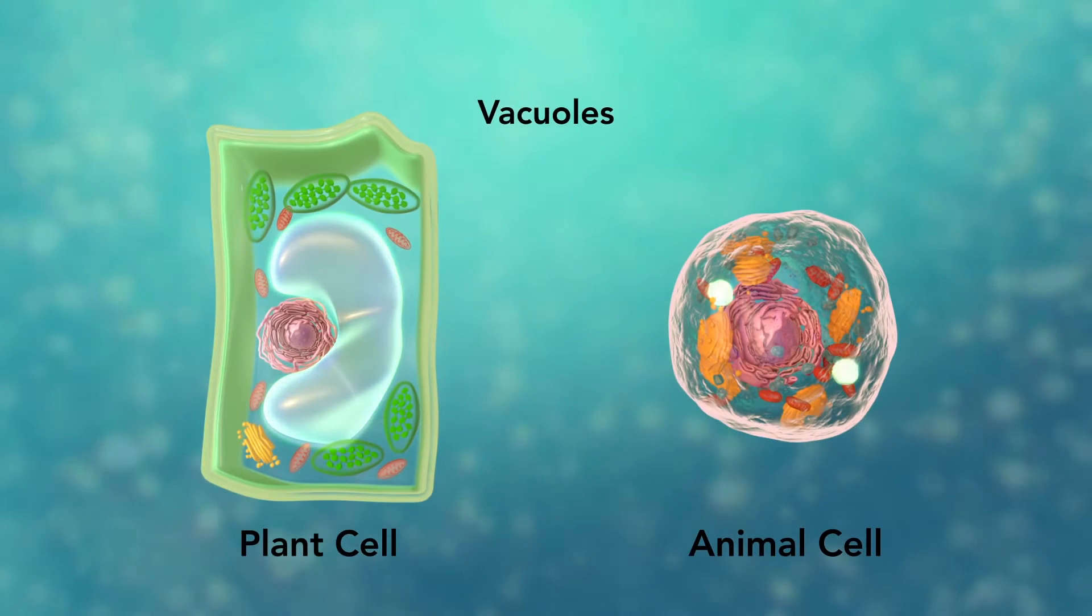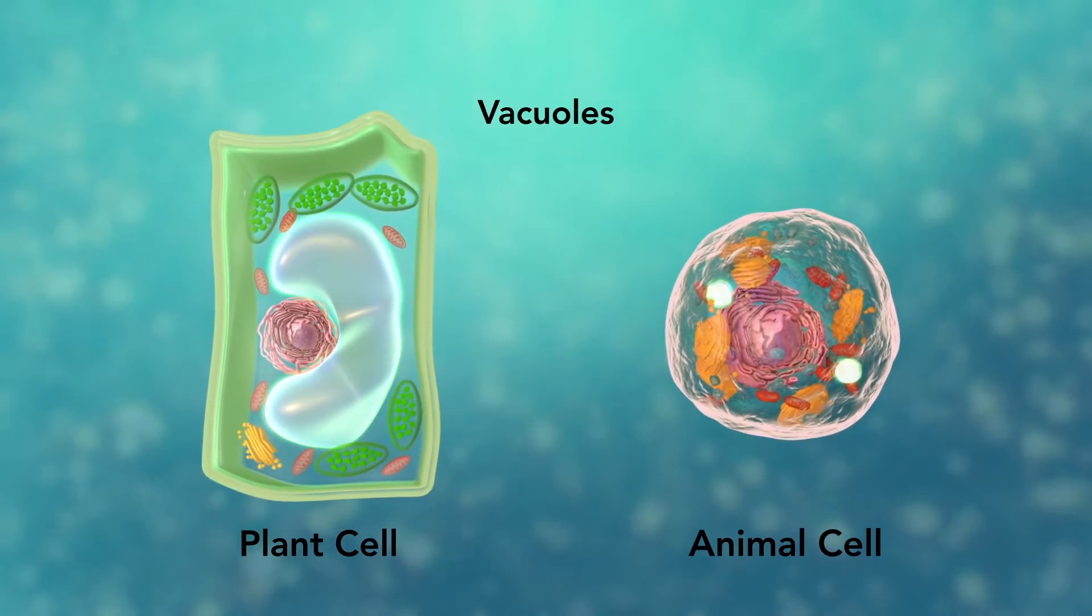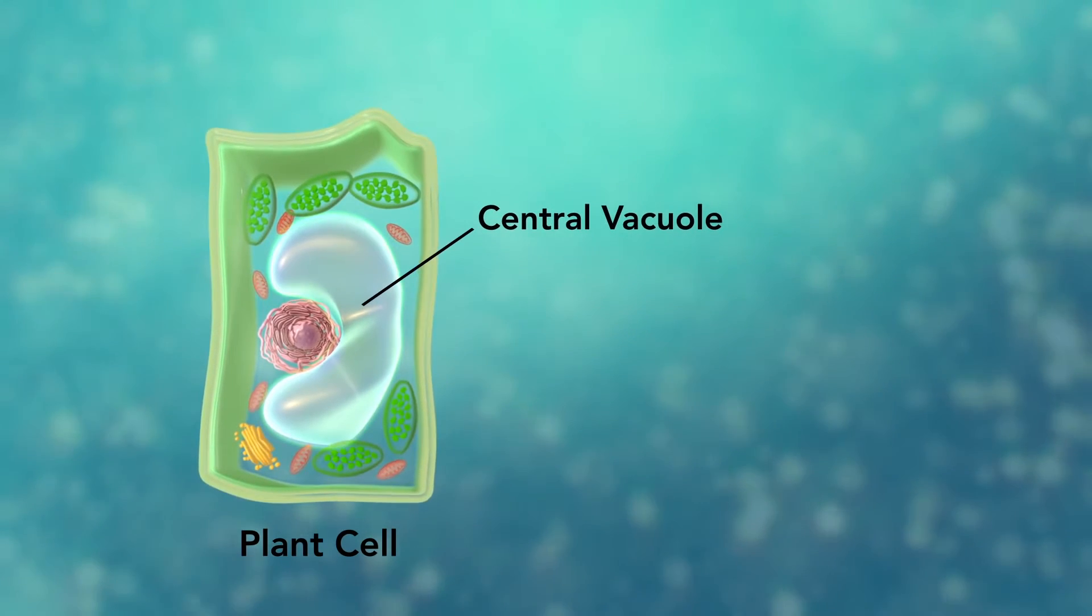Vacuoles are sac-like structures that store different materials. Here in this plant cell, the central vacuole stores water.